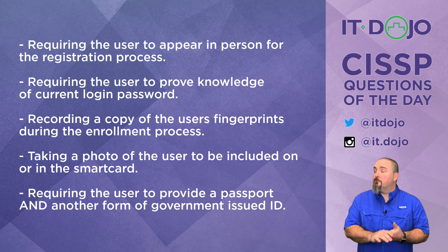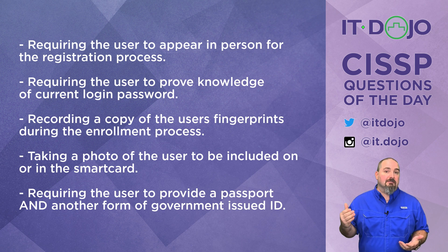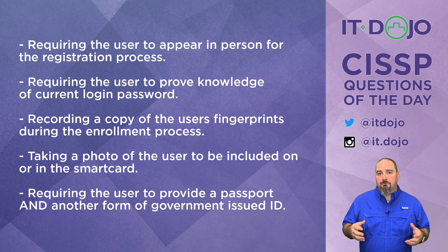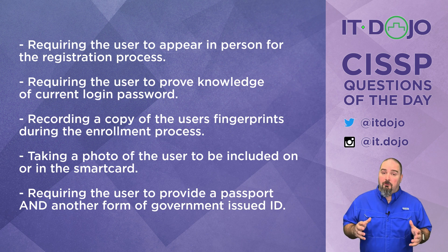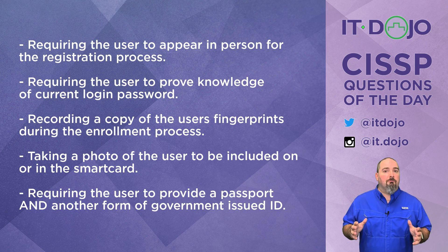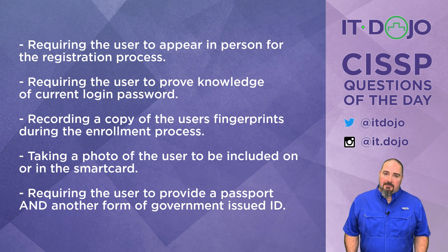Choice number one says you're going to require the user to appear in person for the registration process, and that is totally something that should be high on your list. Just issuing smart cards remotely without ever having seen or verified the person physically is generally regarded as not appropriate. If you look at FIPS 201 — see the link below — it absolutely says that at least one time during the enrollment process the user has to appear in person. So that is a highly likely requirement.